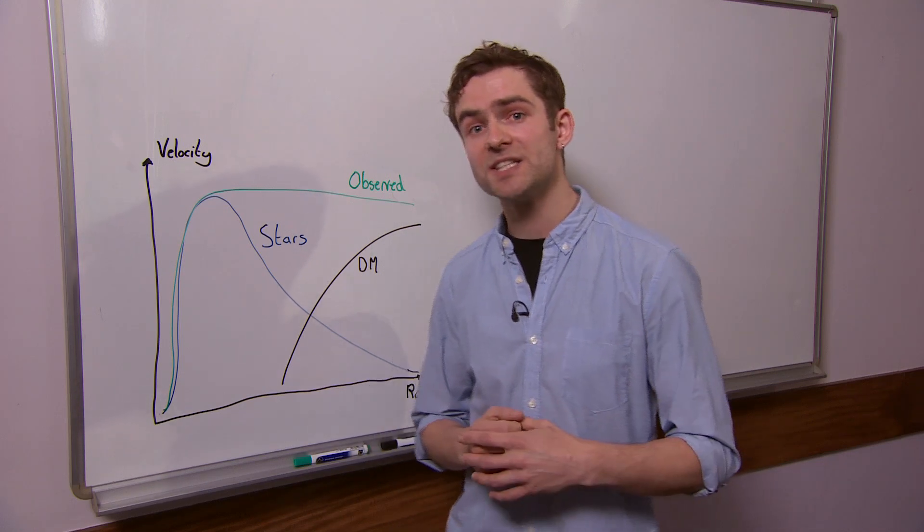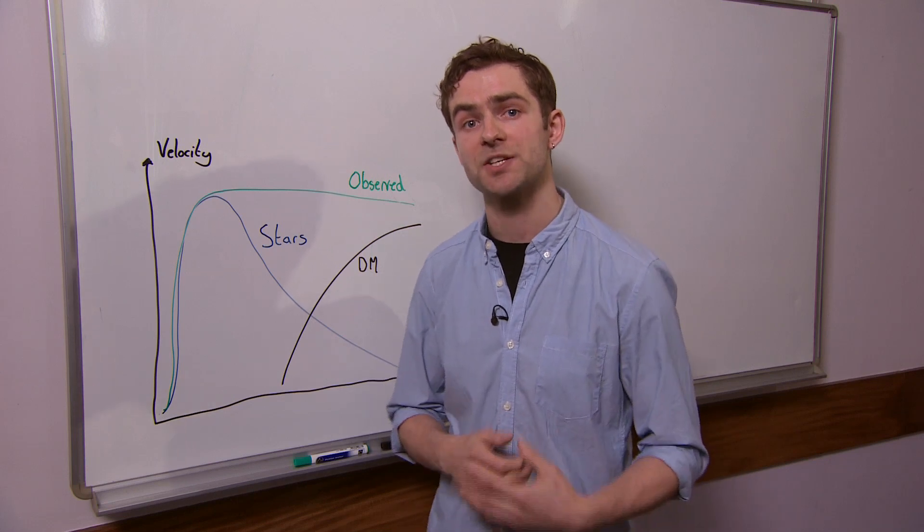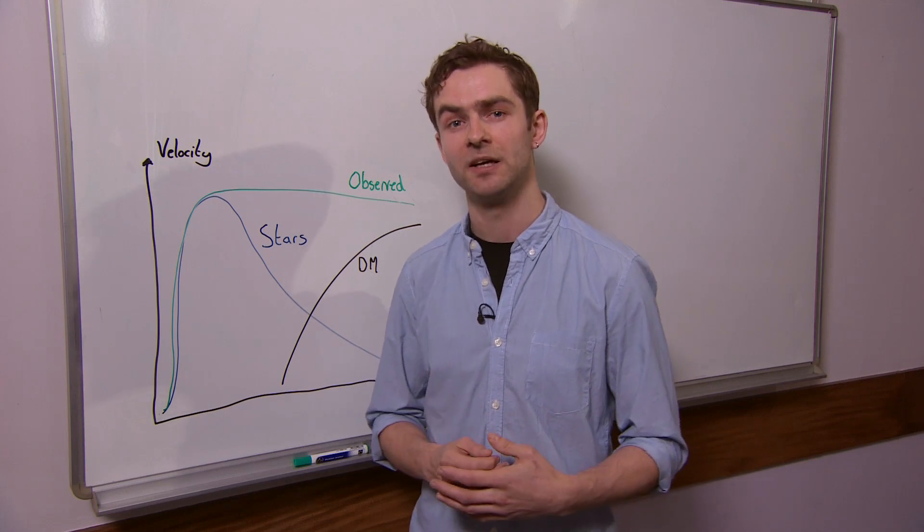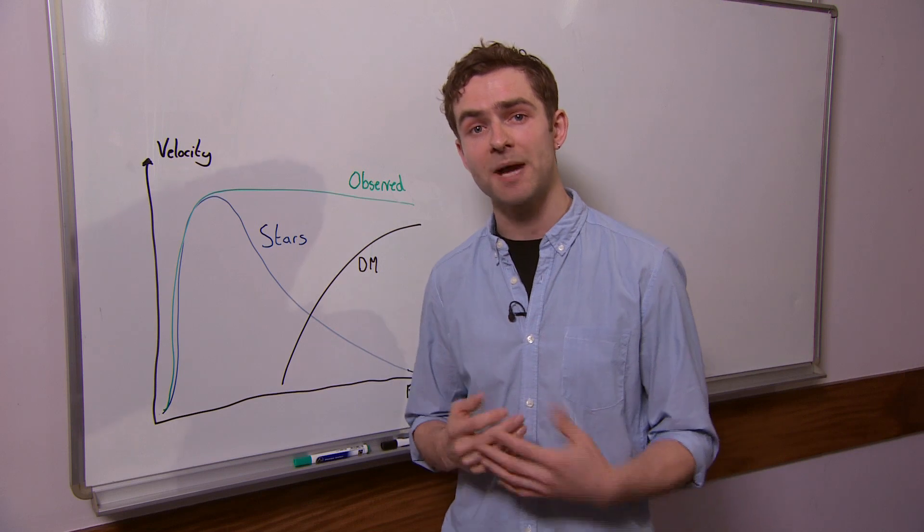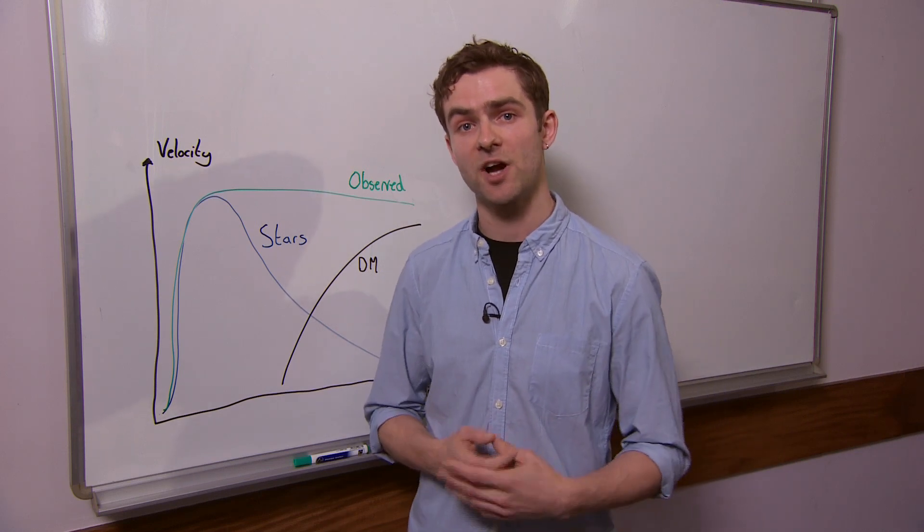Now the mass that we predict in this way is far larger than the mass of the constituent parts of the galaxy or galaxy cluster. Therefore we infer that there's a large amount of material that we don't actually see, and we call this dark matter.